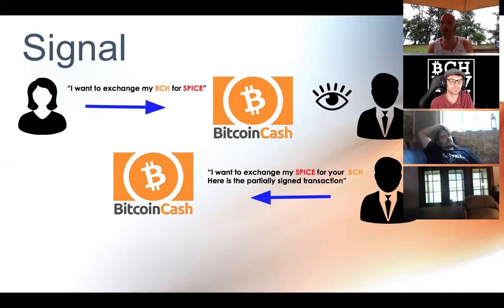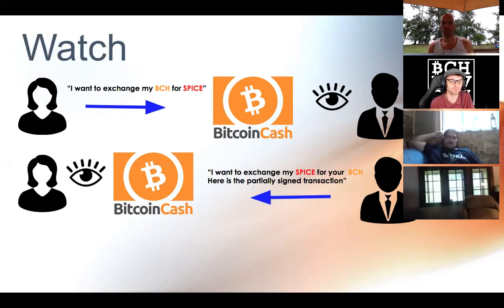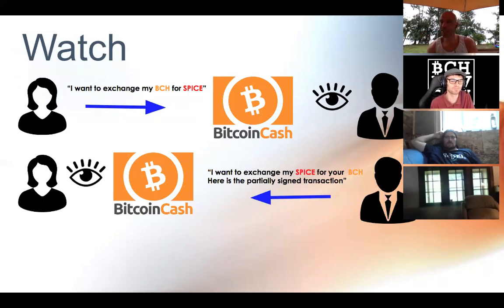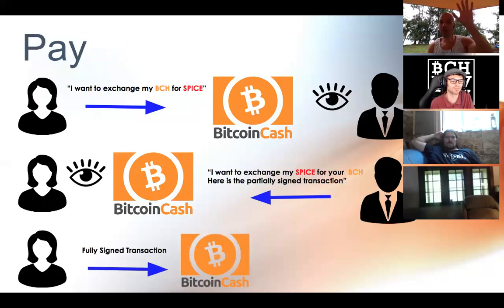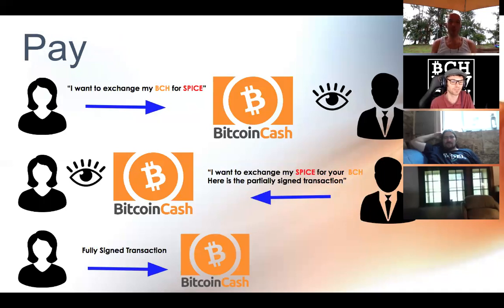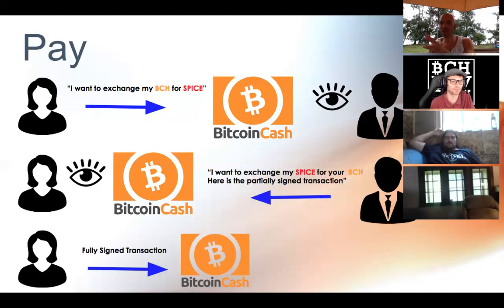Notice that neither party knows where the other one is — there's a high level of privacy here. Alice was watching after she sent the signal. Bob has responded, so she gets this half-signed transaction, looks at it, signs her part, and now it's a valid transaction. She broadcasts the fully signed transaction onto the Bitcoin Cash network. Alice has gotten her SPICE for BCH, Bob has received BCH for his SPICE — all in one transaction. Trustless. Decentralized. Globally available, using existing infrastructure already in your wallets.